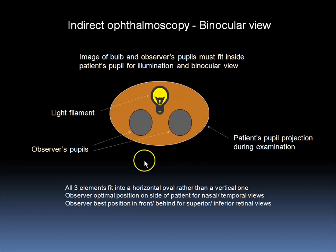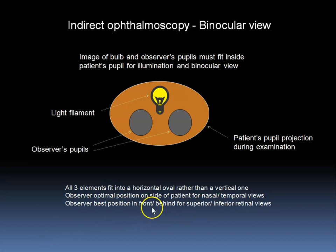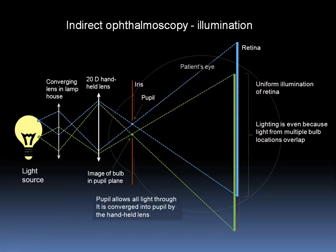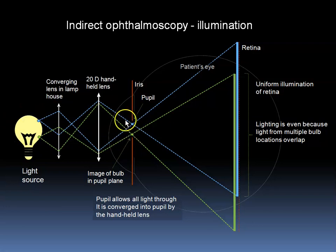Because of this, the observer's optimal position will be on the side of the patient for nasal or temporal views, or in front of or behind the patient for superior and inferior retinal views. In order to obtain appropriate illumination of the retina, it is necessary to have an image of the illuminating bulb in the aperture of the optical system of the eye — in other words, in the pupil.